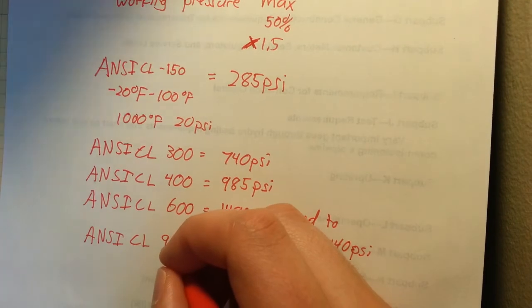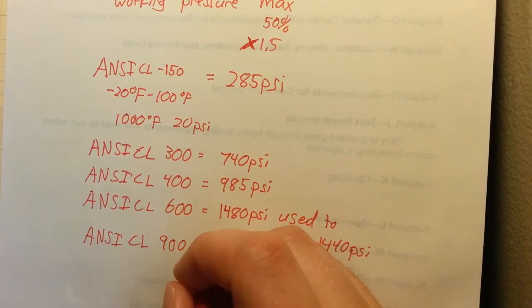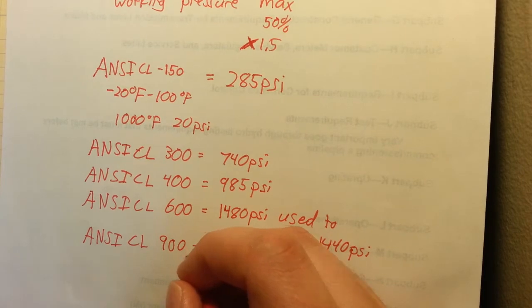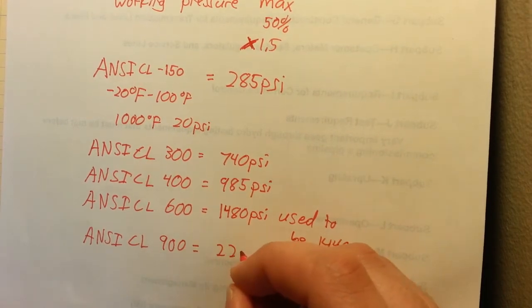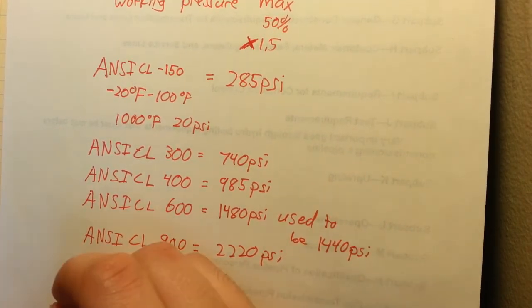ANSI class 900 is the next one. That working pressure is 2220 PSI.